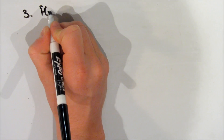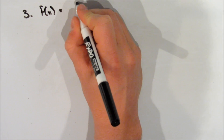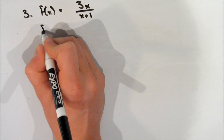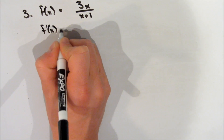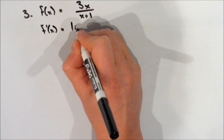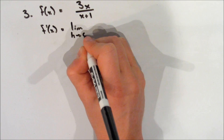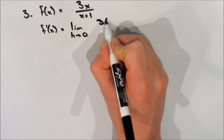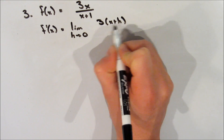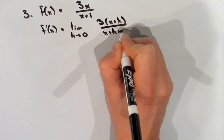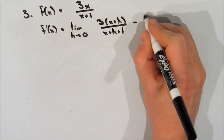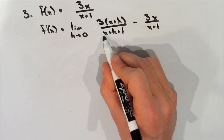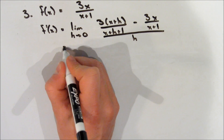This is the last example for today. Our function f of x is equal to 3x over x plus 1. So f prime of x is equal to the limit as h approaches 0. We sub in x plus h wherever there's an x: 3 times x plus h over x plus h plus 1, minus f of x which is 3x over x plus 1, all over h.